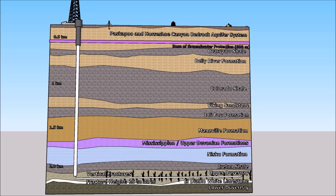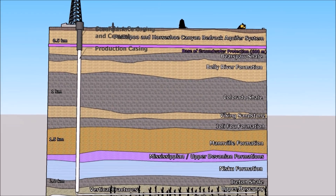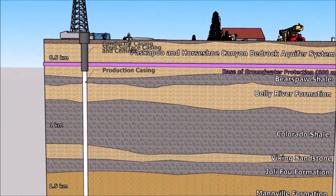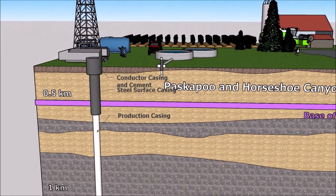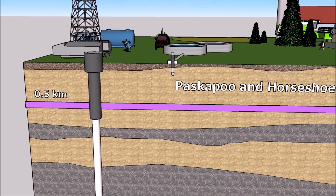In Alberta, Directive 8 ensures that operators install and cement surface casing in place in order to protect domestic use and freshwater aquifers. The pressure-tested surface casing and cement annulus is the most important casing string from a freshwater aquifer protection perspective.